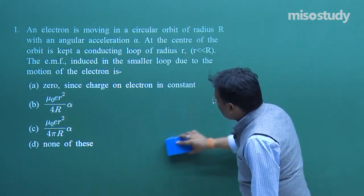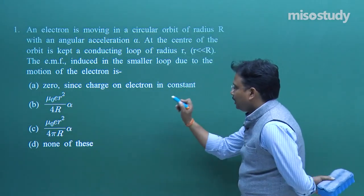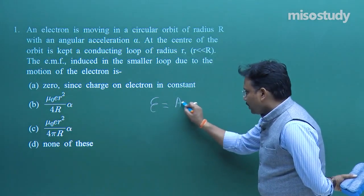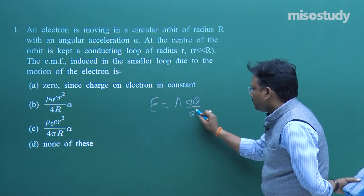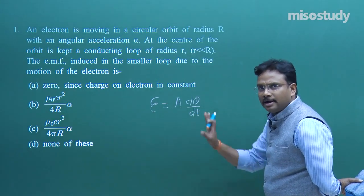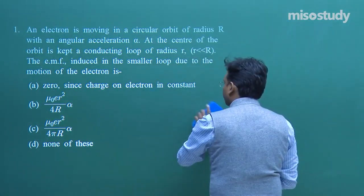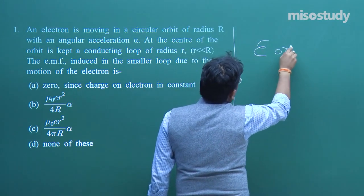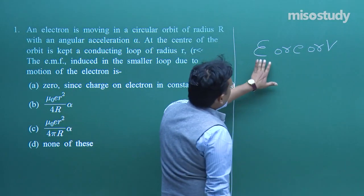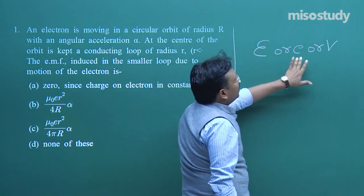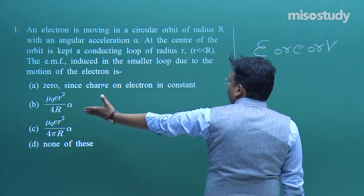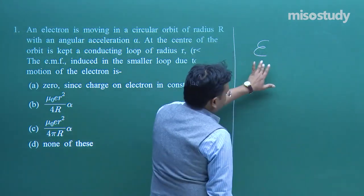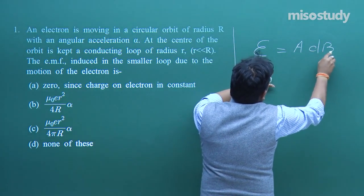The formula we are going to use is: EMF (ε) = −dφ_B/dt. This is our basic result and we will use it again and again during the discussion. So, the induced EMF equals A·dB/dt. Why am I writing dB/dt? Because φ_B = B·A, the area A is constant, and B is the value of the magnetic field which is varying.